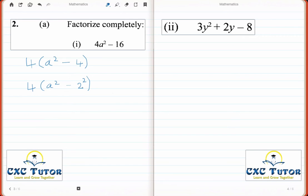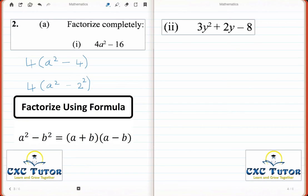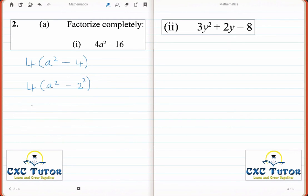Now a squared minus 2 squared is exactly what we consider to be a perfect square. To solve this, we would use the difference of squares method to simplify it. If you don't remember the method, it is as follows. So our answer then should be 4 times (a plus 2) times (a minus 2). That is your answer.